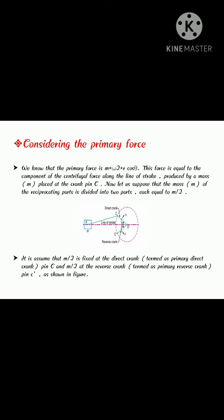Now, let us suppose that the mass of the reciprocating parts is divided into two parts each equal to M by 2. It is assumed that M by 2 is fixed at the direct crank pin C and M by 2 at the reverse crank pin C dash as shown in figure.